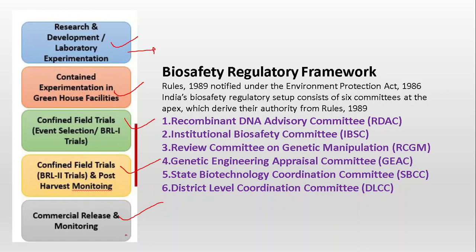India's biosafety regulatory framework is based on rules from 1989, notified under the Environmental Protection Act of 1986. The regulatory setup consists of six committees at the apex which derive their authority from these 1989 rules. The committees are: Recombinant DNA Advisory Committee, Institutional Biosafety Committee, Review Committee on Genetic Manipulation, Genetic Engineering Appraisal Committee, State Biotechnology Coordination Committee, and District Level Coordination Committee. At each stage of GMO production, different committees assure safety and check for possibilities of GMO product development.